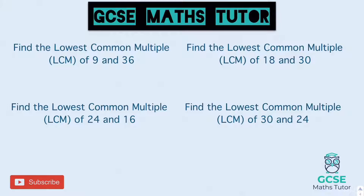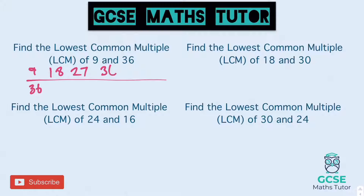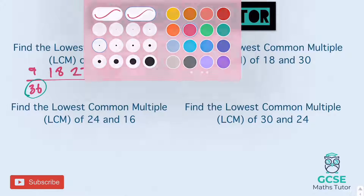So 9 and 36. Let's have a look: 9, 18, 27, 36. So that's a good one — didn't even have to do any on the 36, because 36 is already in the times table of 9. So the lowest common multiple is 36.